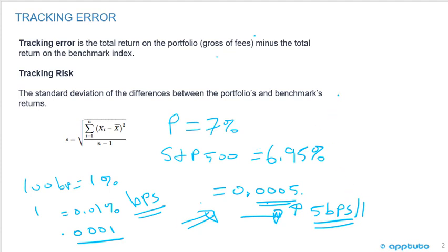The tracking risk is the standard deviation of the differences between the portfolio and the benchmark returns. The LOS doesn't have this as a calculation - I've put this in as a nice to know, not a need to know. And that's the only slide for this LOS. Thank you.